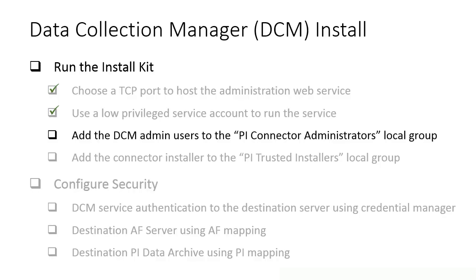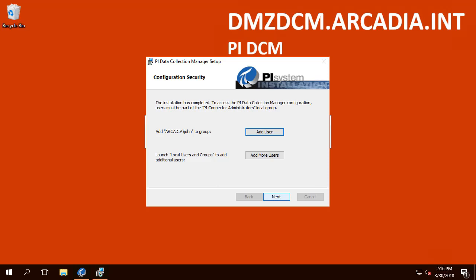The installation kit will create two local Windows groups. One of them is the PI Connector Administrators. Any users added to this group will be able to access the Administration web service. The members of this group will have permission to connect to the DCM admin page to change the configuration, stop and start the connector and relay, and also route the data flow. Since we are running the install kit as John user, it is already selected. We will be using the same user to configure the DCM in the next video, so we add it to this group.